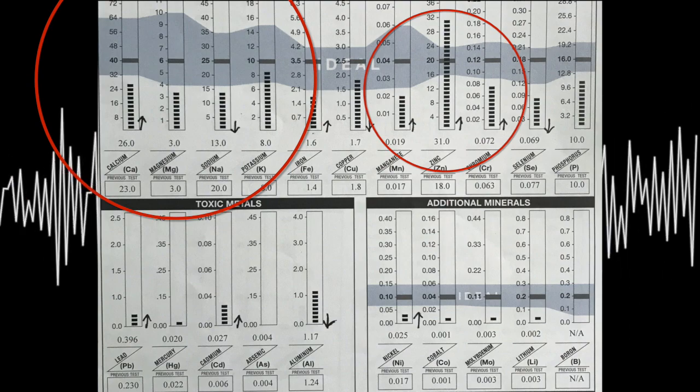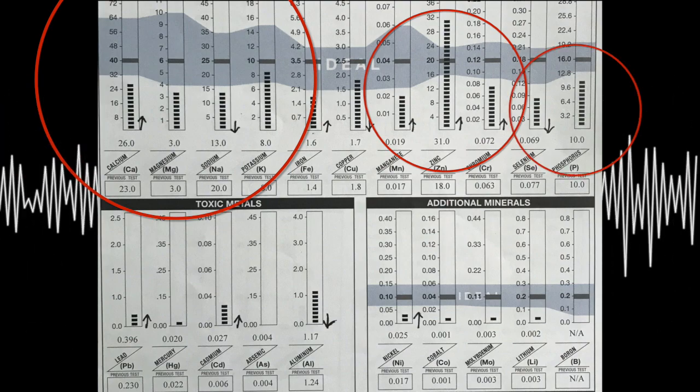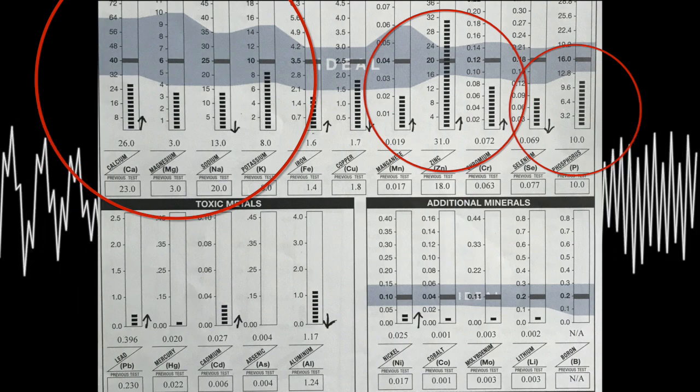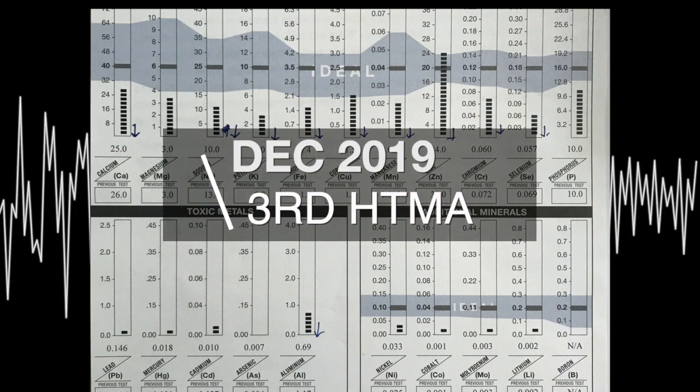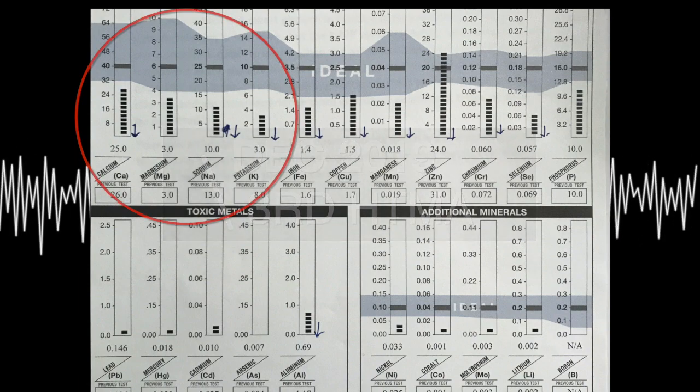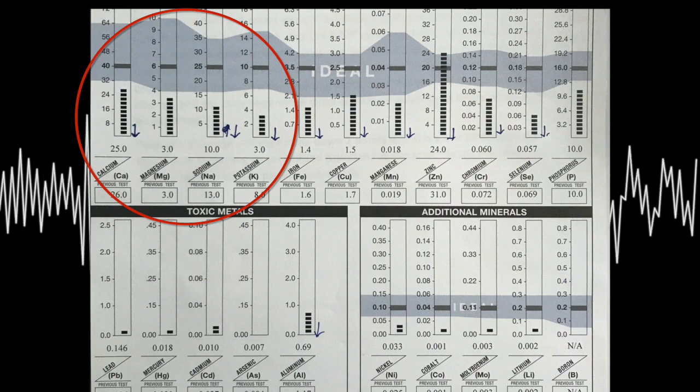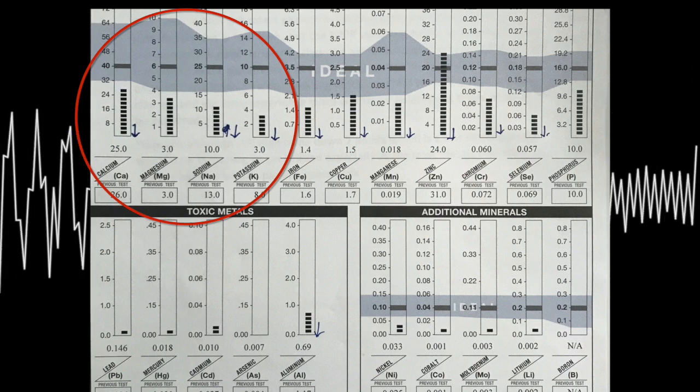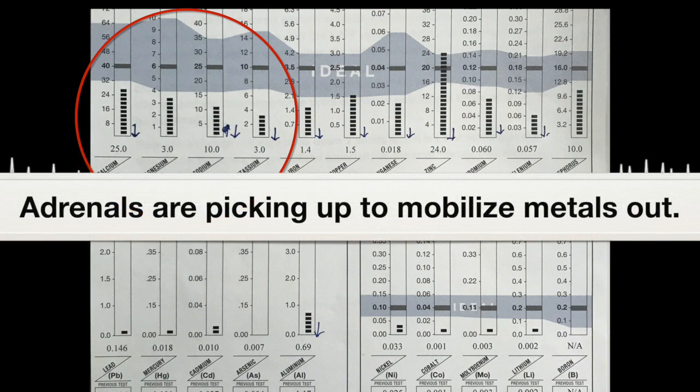And that's what this hair tissue test is really telling me, besides the obvious of the 4-low pattern. And just really the low phosphorus, the ATP for the phosphorus, the digestive issues with the phosphorus. Then we fast forward to the third test, taken in December of 2019. And we see that the sodium-potassium ratio improved. It went from 1.63 to 3.33. So that's telling me that something good is going to happen. She's going to start, the adrenals are picking up, so she could start mobilizing some metals out.